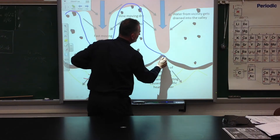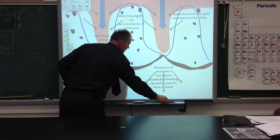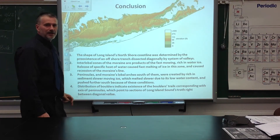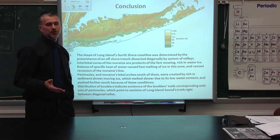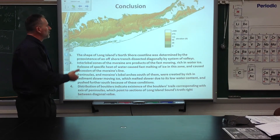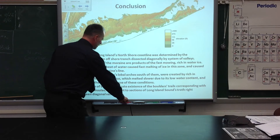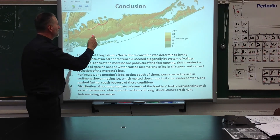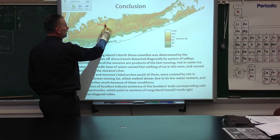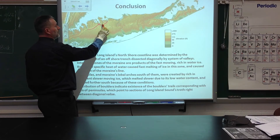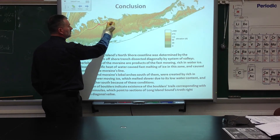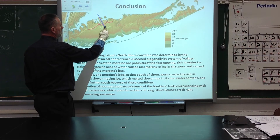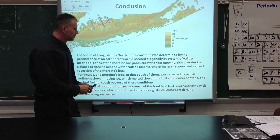And again, we have our peninsula, bay, peninsula, and bay going in this direction — this is our Long Island coast. In conclusion, we can say that the formation of the North Shore's coast was directed by the topography of Long Island Sound. We can also conclude that the recession of the moraine is caused by the area where we have faster melting, versus the area of the peninsula, which is slower-moving ice melting at a much lower rate. And we observe evidence of trails of boulders, which correspond with peninsulas. Thank you for watching. Waldemar Paholik from Central Island High School.